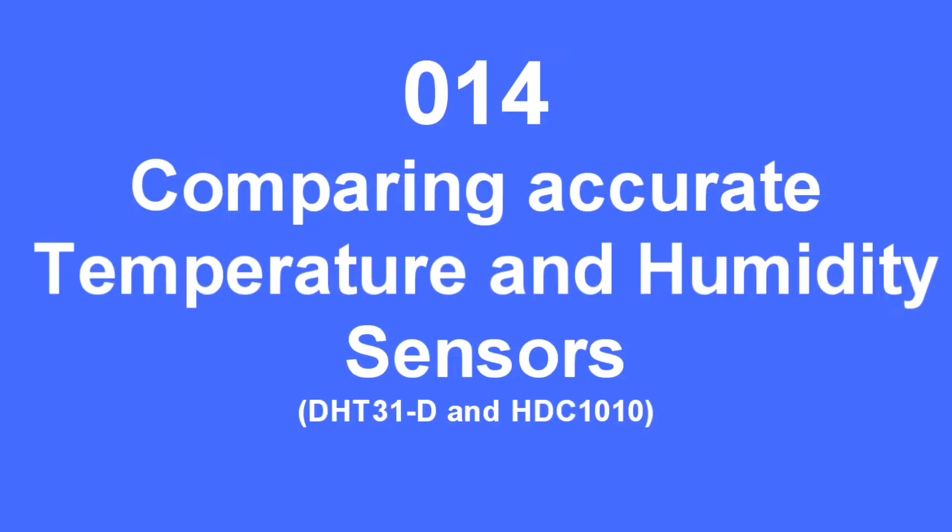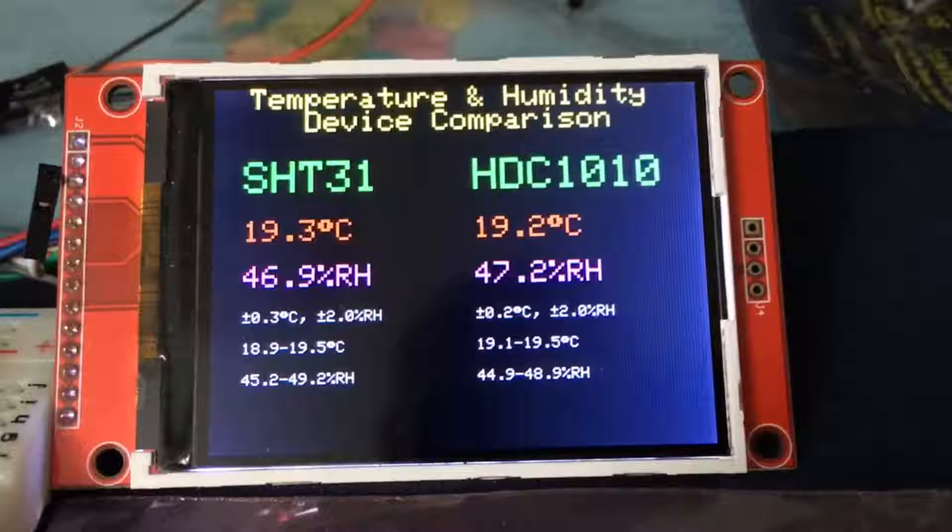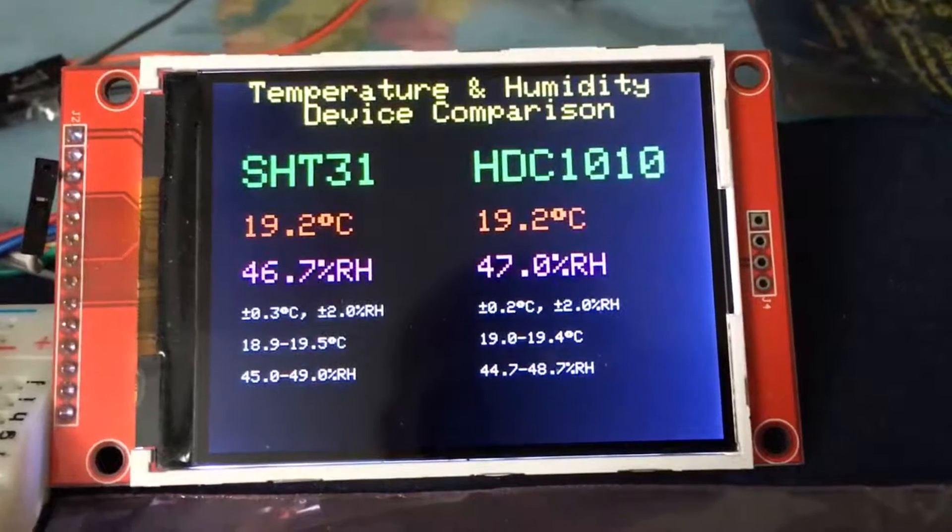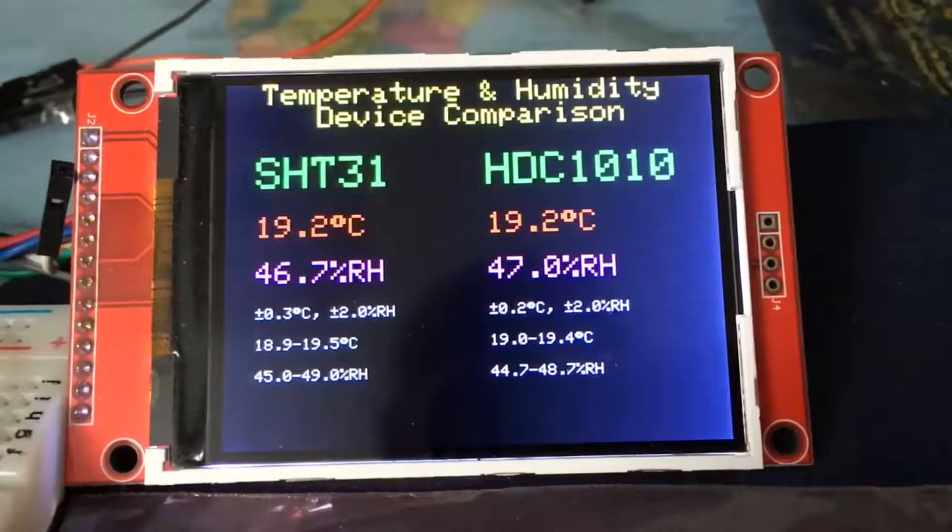I've been trying to get a perfect temperature and humidity sensor and so what I've done is run a test between the DHT31 and the HDC1010. That's two different manufacturers of precision temperature sensors.